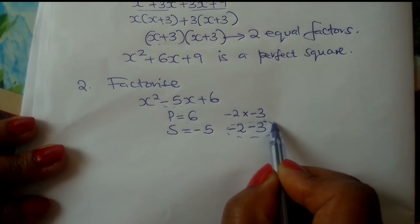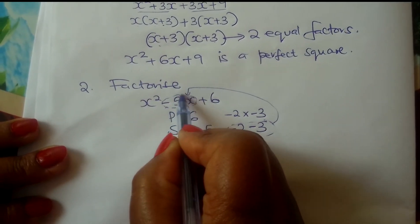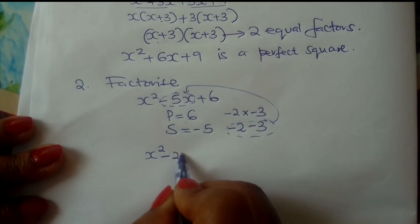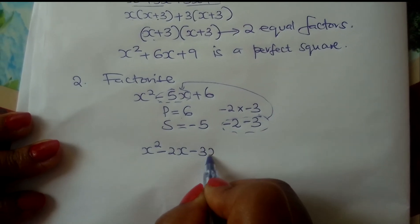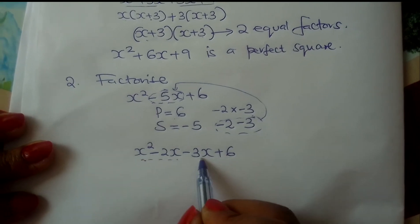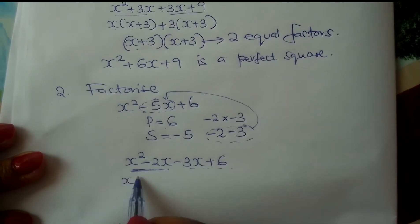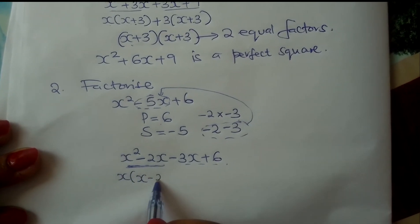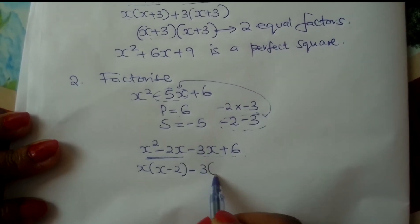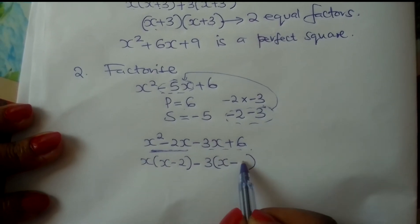Again, take these numbers and substitute them in the second term, the whole of this term. And therefore you get x² - 2x - 3x + 6. Divide this expression into 2 again, the first group and the second. Factorize here. Factor out x, it will be left with x - 2. Put this minus here. Factor out 3, you will be left with x - 2 inside the bracket.